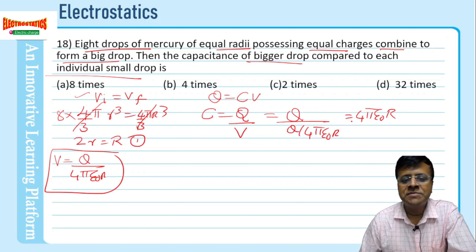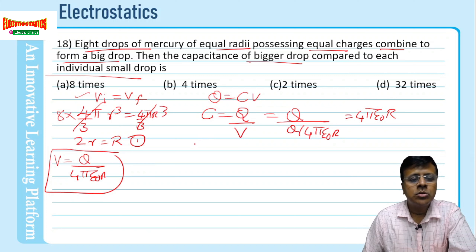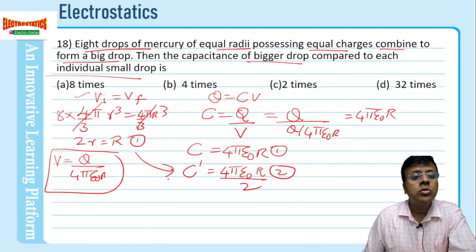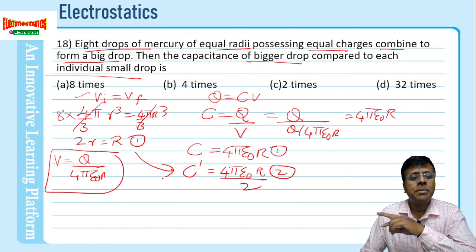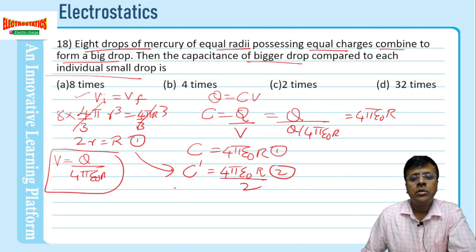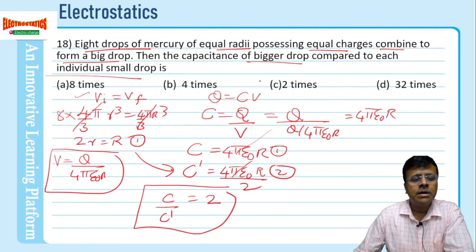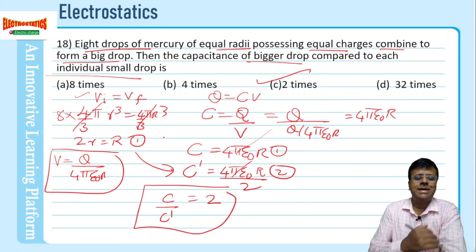Dividing the two capacitance expressions, the common terms cancel and the capacitance of the bigger drop is 2 times that of the individual smaller drop. That is the answer.